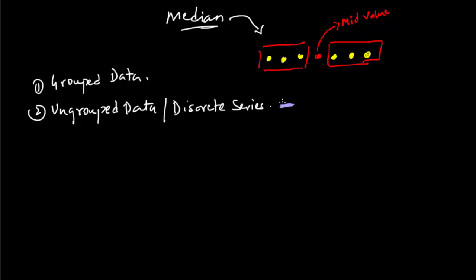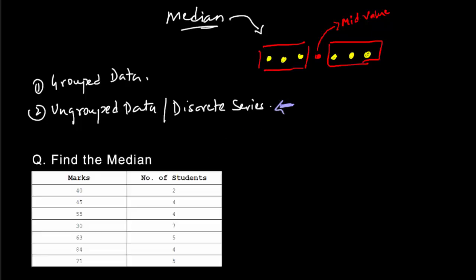The first case is ungrouped data or discrete series. Here the data is given in a straightforward manner — we have marks in one column, let's call it X, and then we have the frequency of students getting those marks in another column. For example, two students got 40 marks, four students got 45 marks, four students got 55, and so on.